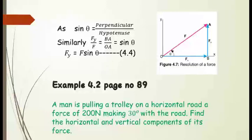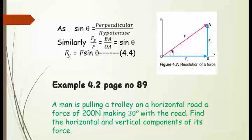For the vertical component fy, we use sin theta, which equals perpendicular over hypotenuse. In the figure, the perpendicular is BA and its component is fy; the hypotenuse is OA, which is the force F. Putting these values in the ratio: fy divided by F equals sin theta. So the final equation is fy = F sin theta. This equation lets us find the magnitude of the vertical component.